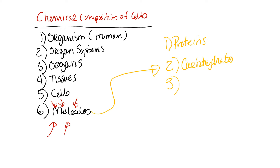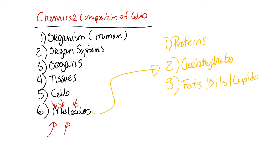The last molecule we'll discuss is fats — sometimes called oils or lipids. Fats, oils, and lipids surround the cell as a plasma membrane, which is essentially the skin of the cell — we'll cover that in the next unit. They are also used as messengers, which we'll discuss later in the semester.